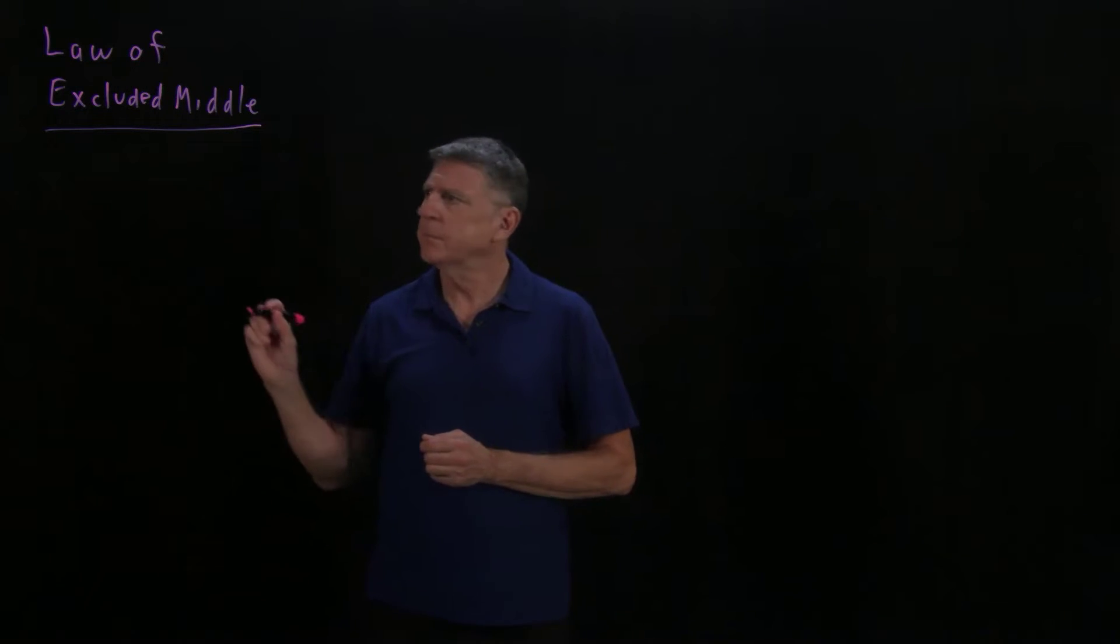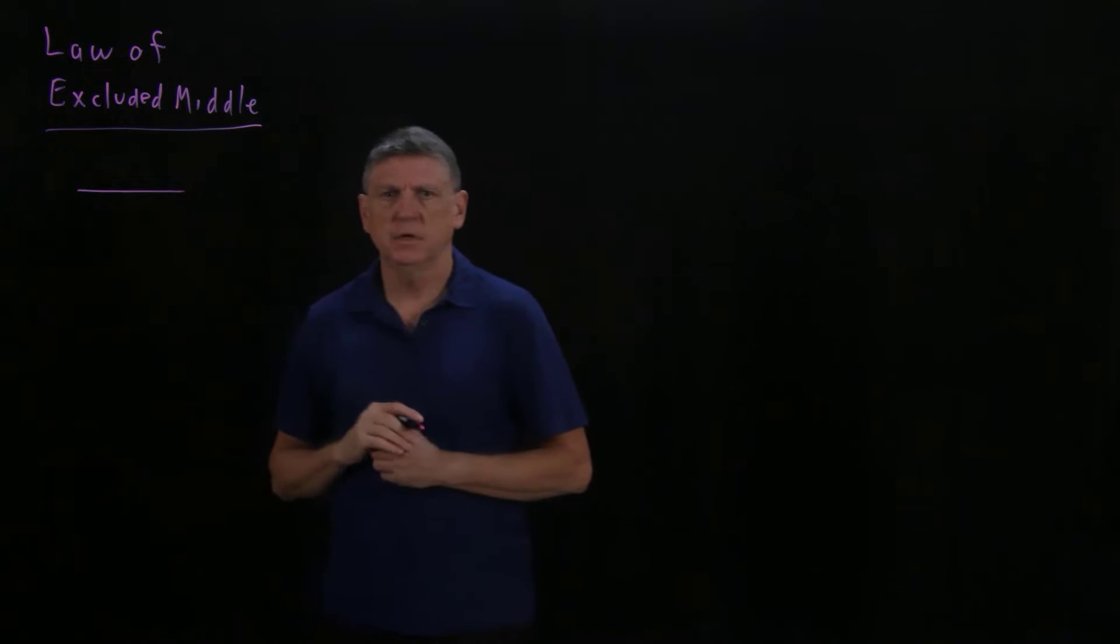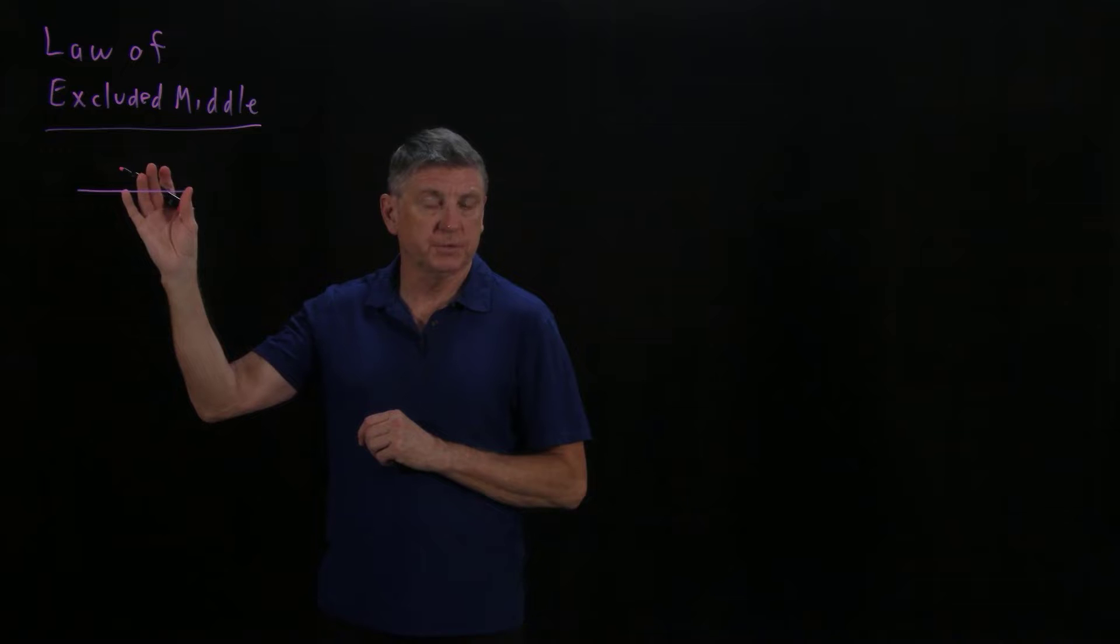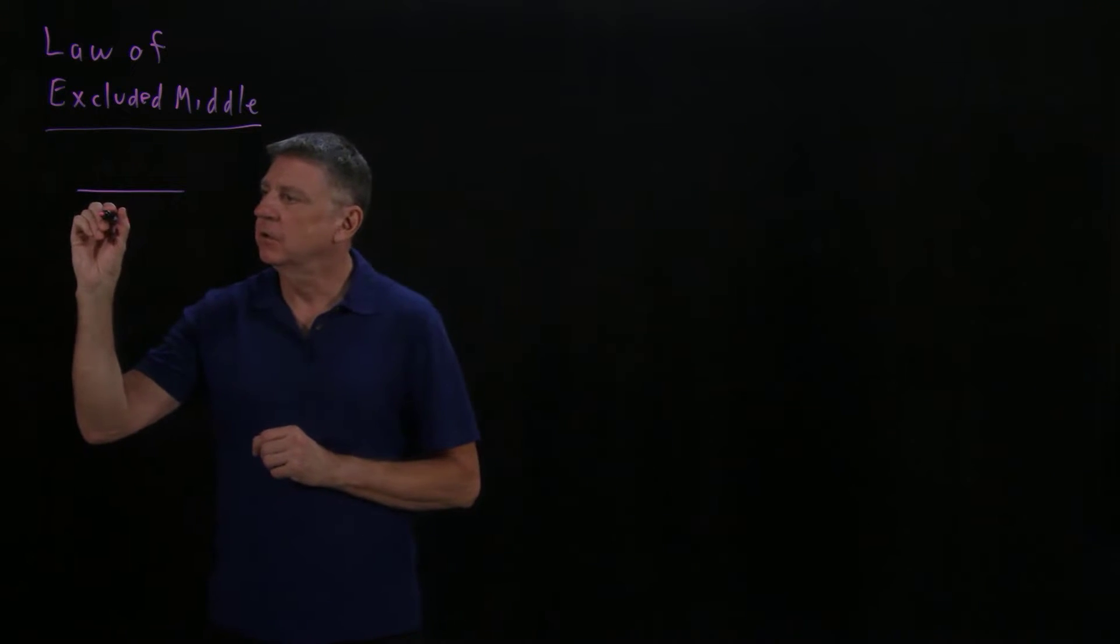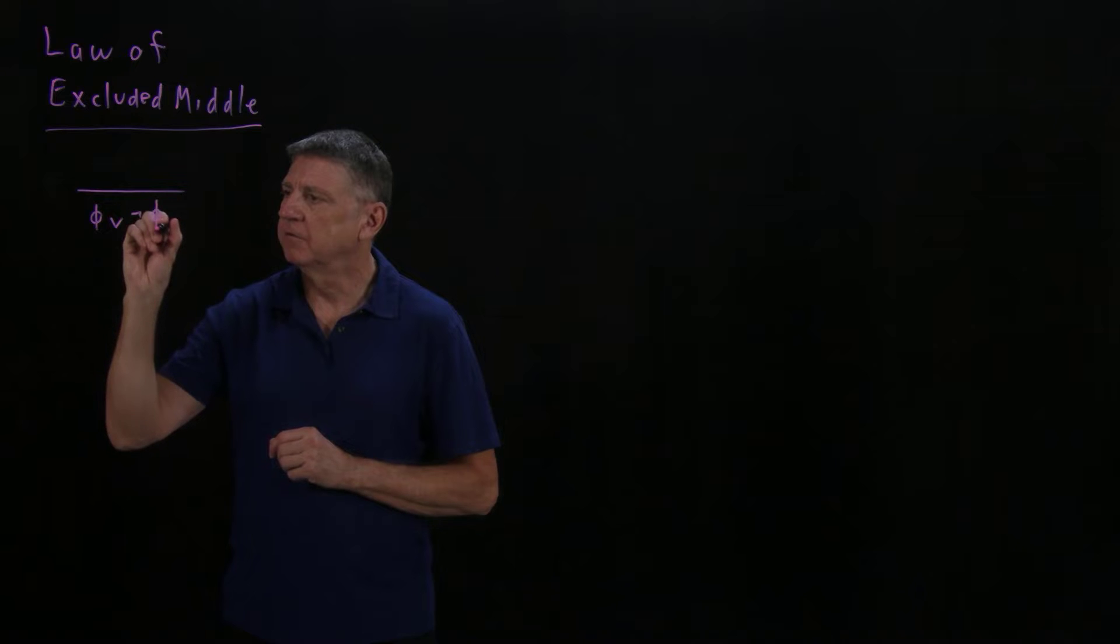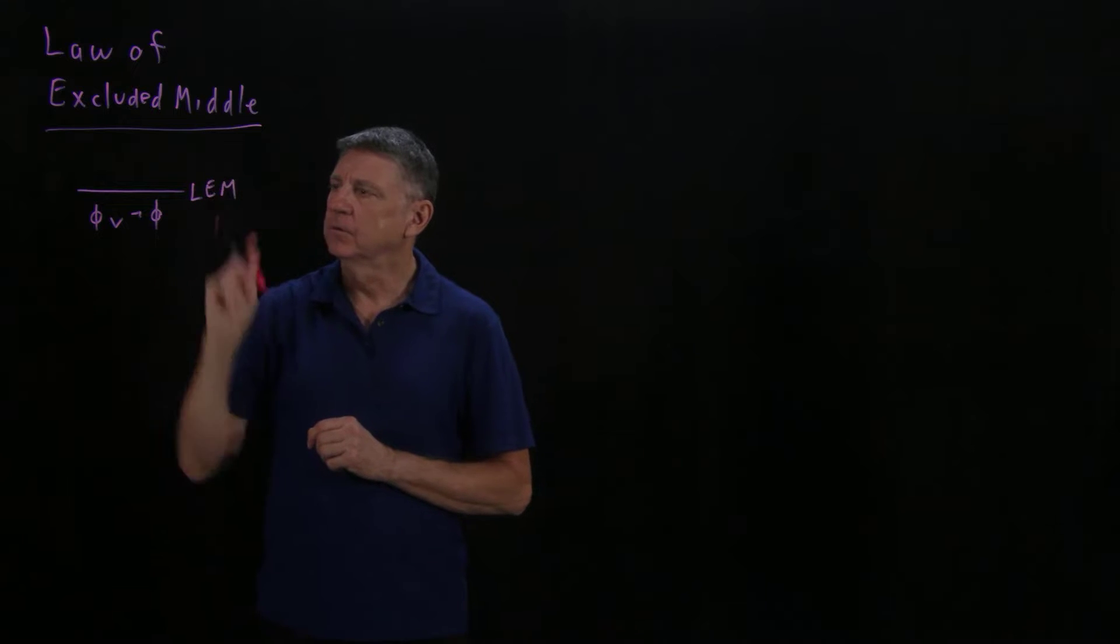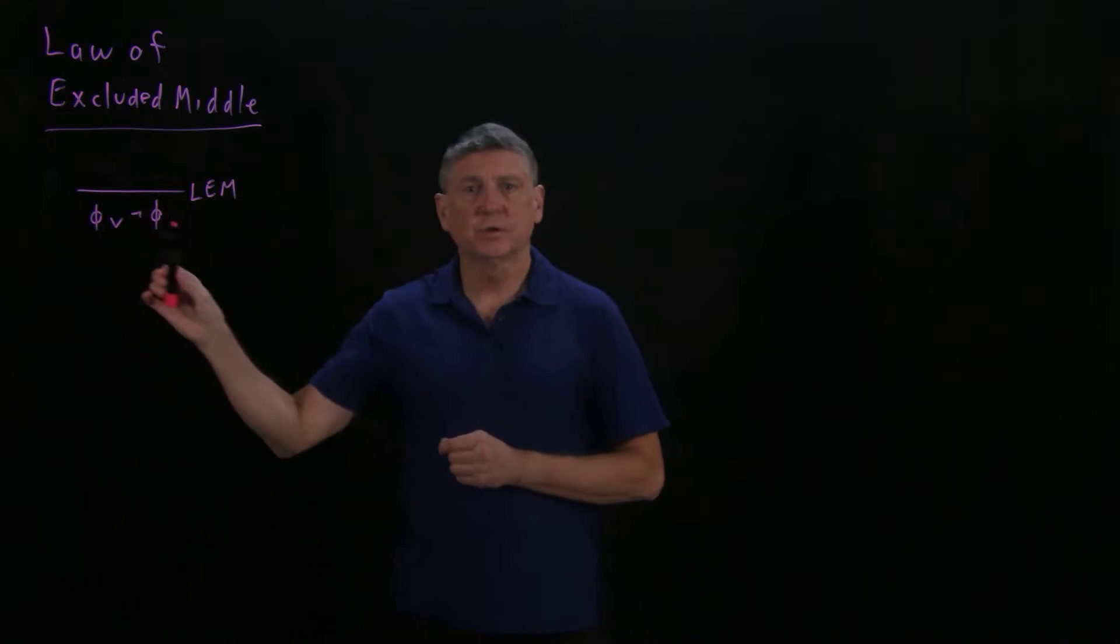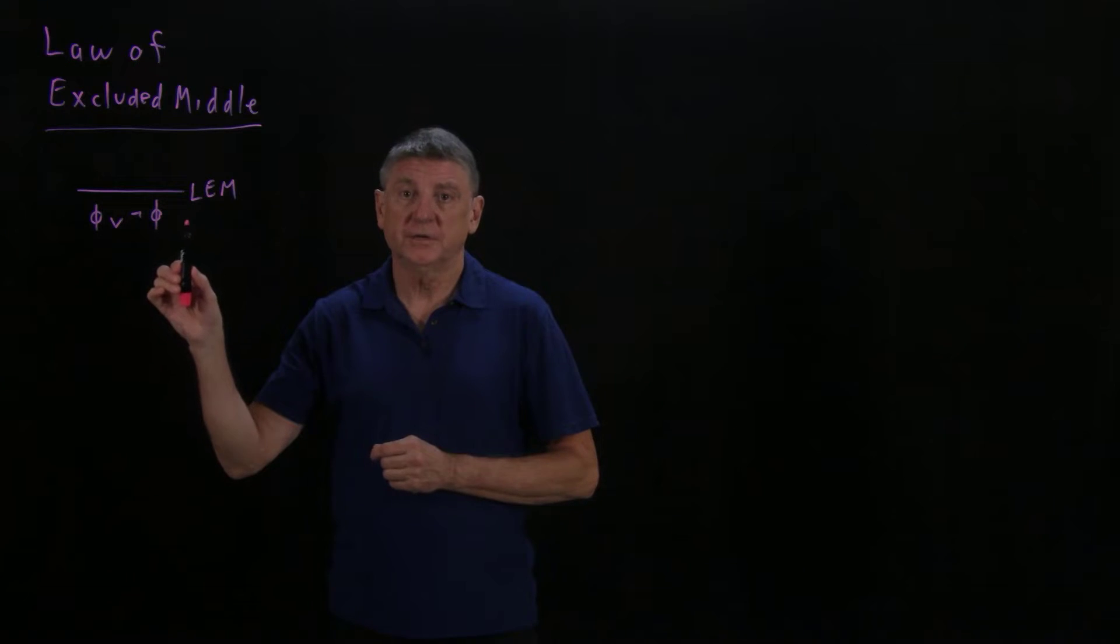The law of excluded middle is one that says at any time in a proof, even if there are no premises or assumptions at the places that you're working at, you can deduce a formula disjoined with the negation of the formula. And that is a derived rule that's called the law of exclusion. The reason it's called excluded middle is that you can think of it as either the formula is true or the formula is not true.